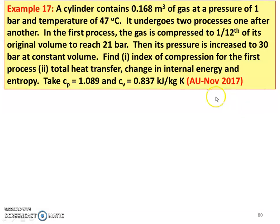Example number 17 from November 2017 question paper. A cylinder contains 0.168 m3 of gas at a pressure of 1 bar and temperature of 47 degrees Celsius. It undergoes two processes, one after the other. The first process: the gas compressed to 1 twelfth of the initial original volume to reach 21 bar. Then its pressure is increased to 30 bar at constant volume. Find the index of compression for the first process, total heat transfer, change in internal energy and entropy. Take CP equal to 1.089 and CV equal to 0.837 kilojoules per kilogram Kelvin.